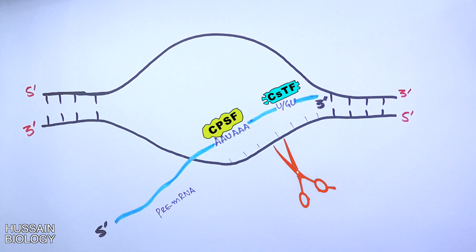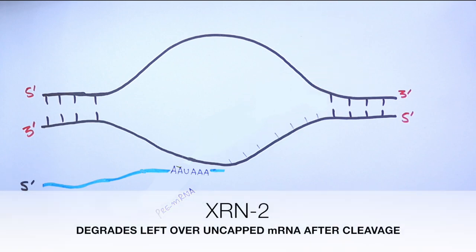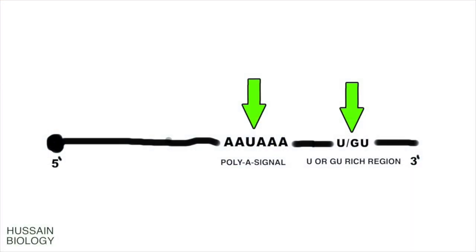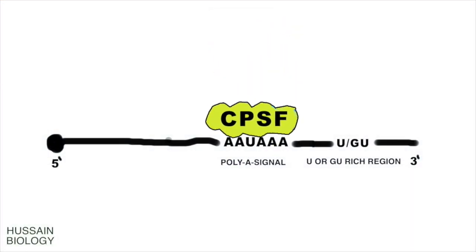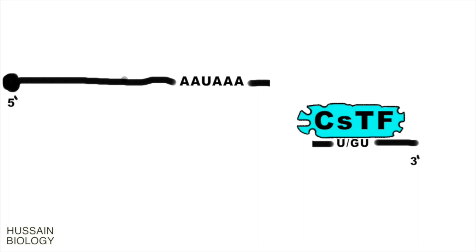After binding, the CStF stimulates the CPSF molecule to drive its process. Looking at the mRNA molecule separately in the animation: CPSF binds the AAU AAA signal and CStF binds the U or GU rich region. After binding, CStF stimulates CPSF, and it is the CPSF73 molecule which cleaves the mRNA molecule just downstream of the AAU AAA signal, as shown in the animation.